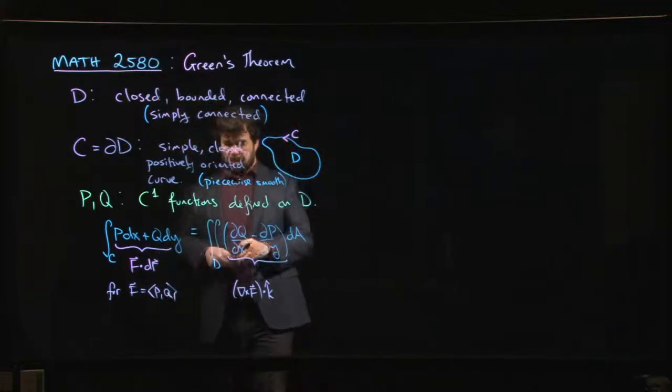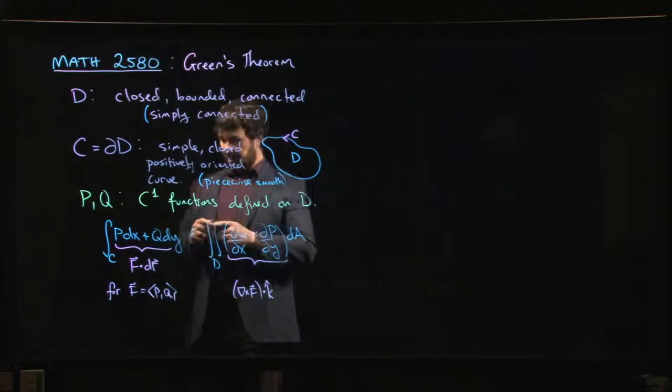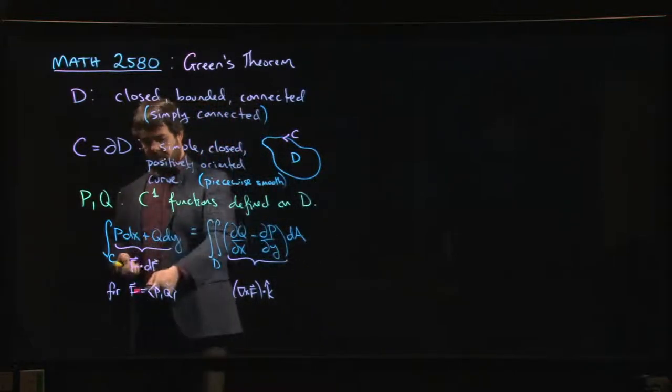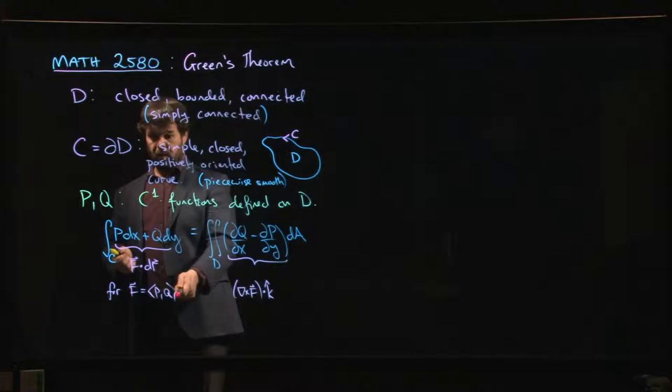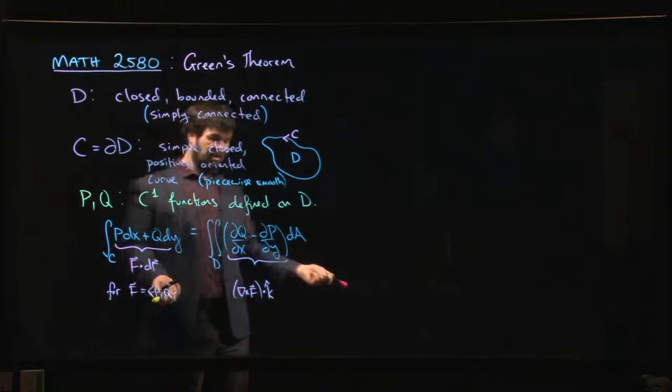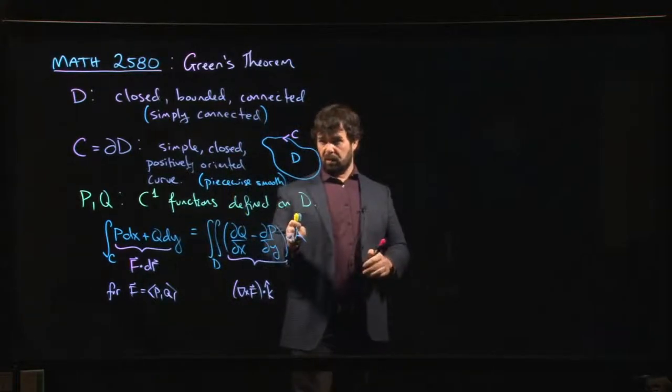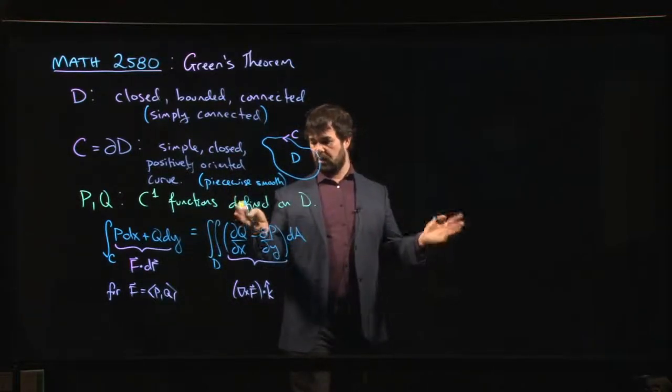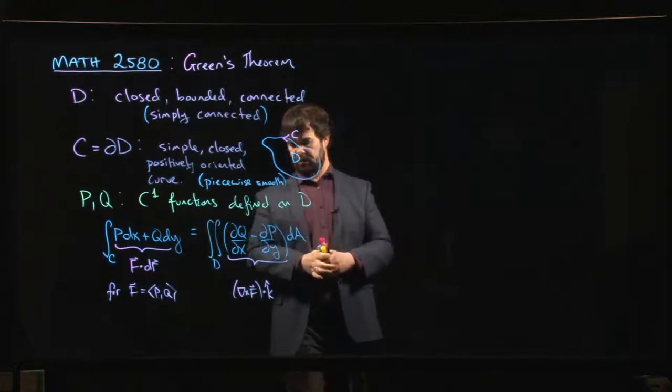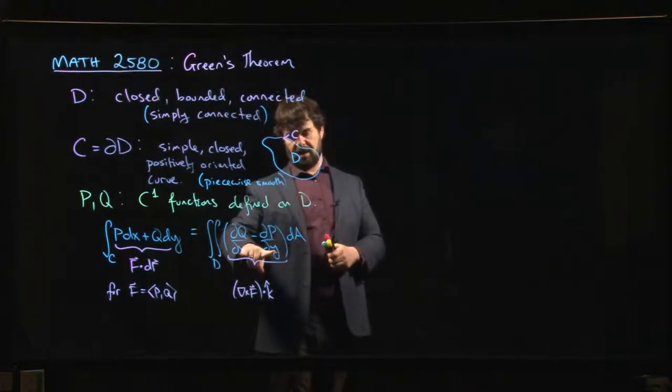Curl is really something we should do in 3D, but we can pretend that we just have a vector field where the z component is 0, and these functions only depend on x and y. You can compute the curl in that context. The x and y components of the curl are always 0. The only one that comes out to be non-zero is the z component, and it's exactly this.